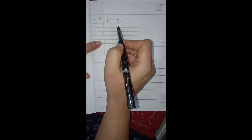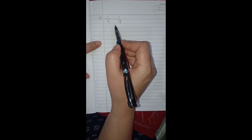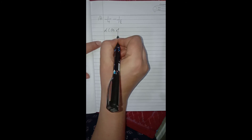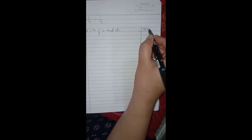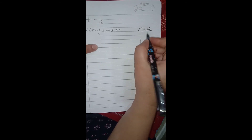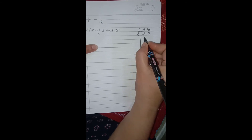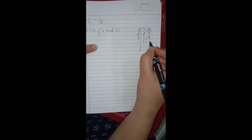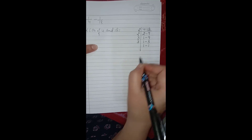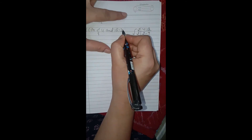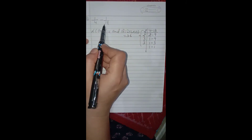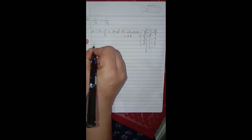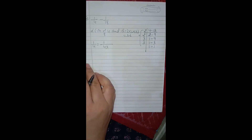The last part: 1 by 4 minus 1 by 18. Again both denominators are different, so we need to take the LCM. LCM of 4 and 18: both are even, so we use 2 — 2 twos are 4, 2 nines are 18. Then 2 again, and then 3 twice. So 2 into 2 into 3 into 3 gives 4 threes are 12, and 12 threes are 36. The LCM is 36.